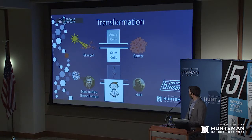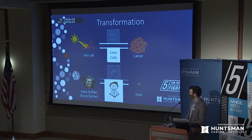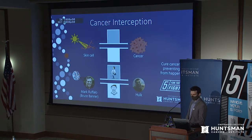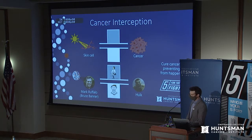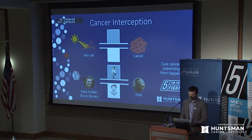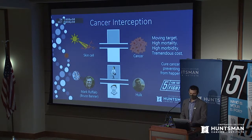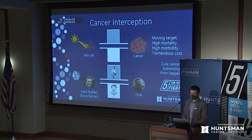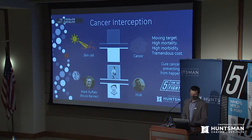If you want to deal with the Hulk, you can make sure Mark doesn't get angry and stays calm, and then you don't have to deal with that beast. Same idea here: if we reduce the angry stimulus and increase the calm stimulus, maybe you won't have to deal with the cancer. This concept is called cancer interception — the idea that we could cure cancer by preventing it from happening in the first place. If we let cancer progress fully, it becomes very difficult to deal with: a moving target associated with high mortality, high morbidity, and tremendous cost in terms of finances, emotion, and years of quality life.